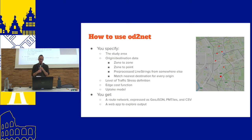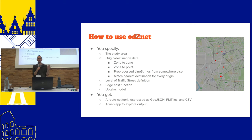The key input that might be a bit confusing is the OD data — origin destination. You have to tell OD2NET what trips people take: the start and end points. You can usually get this from census data depending on your country. A lot of times it's expressed as zone-to-zone: maybe 500 people live in some area, 30% are students, and you make assumptions about who's going to school. OD2NET always wants a specific point in space — representing a building or park or somewhere people actually begin or end a trip — rather than just a zone centroid.